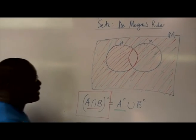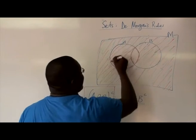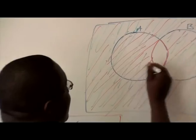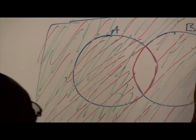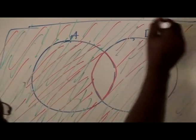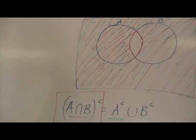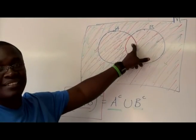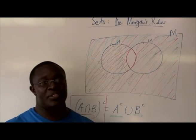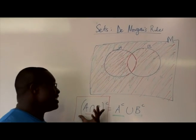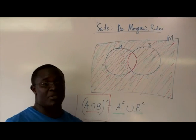Now let me shade everything that is not in B in green as well. After finishing shading, the only part I didn't shade was the intersection region. In this way, I have visually proven that (A intersection B) complement is the same as A complement union B complement.